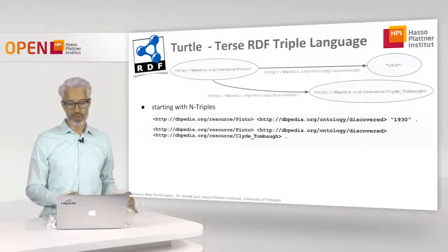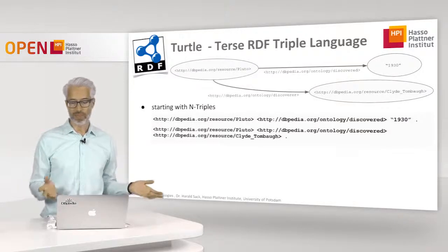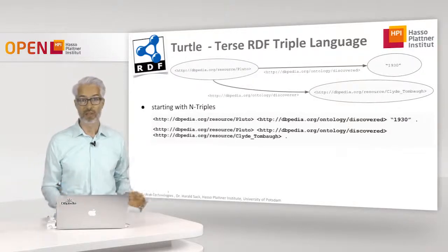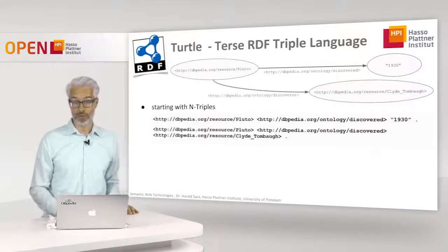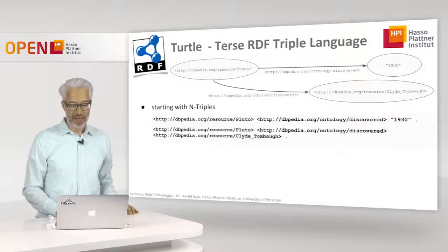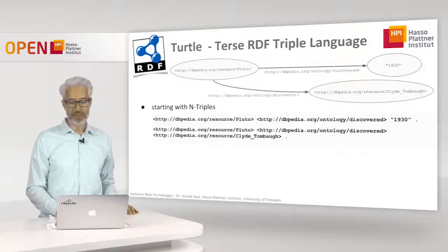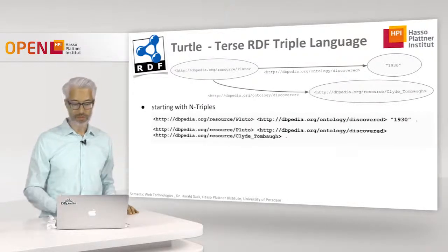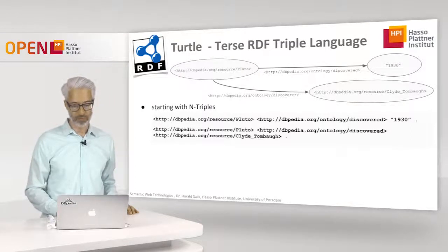What you see here is: we have planet Pluto, it has been discovered in 1930 — so 1930 is a literal — and it has been discovered by Clyde Tombaugh, who is the discoverer of Pluto.